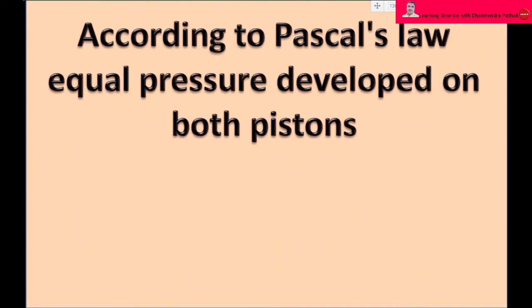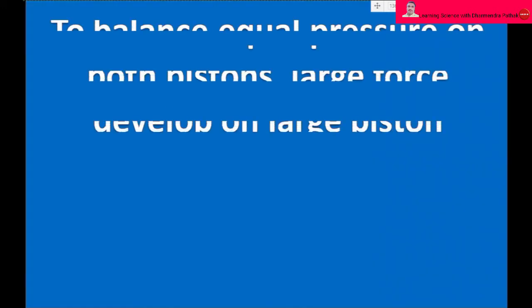According to Pascal's law, equal pressure developed on both pistons. Pressure developed on first small piston is P1, which is equal to pressure developed on large piston P2. Or F1 by A1 equal to F2 by A2.